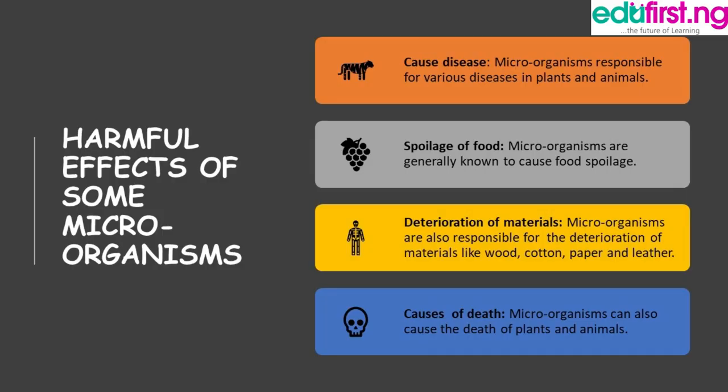We are going to look at the harmful effects of some microorganisms. There are causes of diseases, spoilage of food, deterioration of materials, and causes of death. Animal diseases caused by viruses include: poliomyelitis, infection, hepatitis, measles, common cold, German measles, influenza, smallpox, chickenpox, yellow fever, rabies, acquired immune deficiency syndrome (AIDS/HIV), foot-and-mouth disease, rinderpest and Newcastle disease.